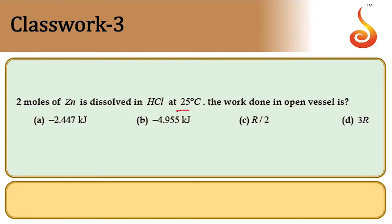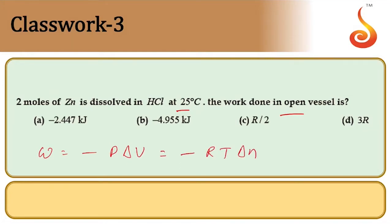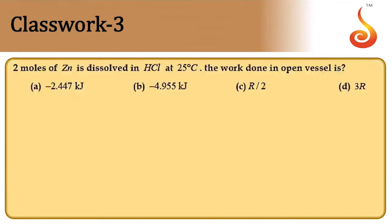Next: two moles of zinc dissolved in HCl at 25°C — what is the work done in an open vessel? Work done is given by −PΔV, which can also be expressed as −RTΔn, where Δn comes from the reaction between reactants and products. Let us take the reaction between zinc and HCl.